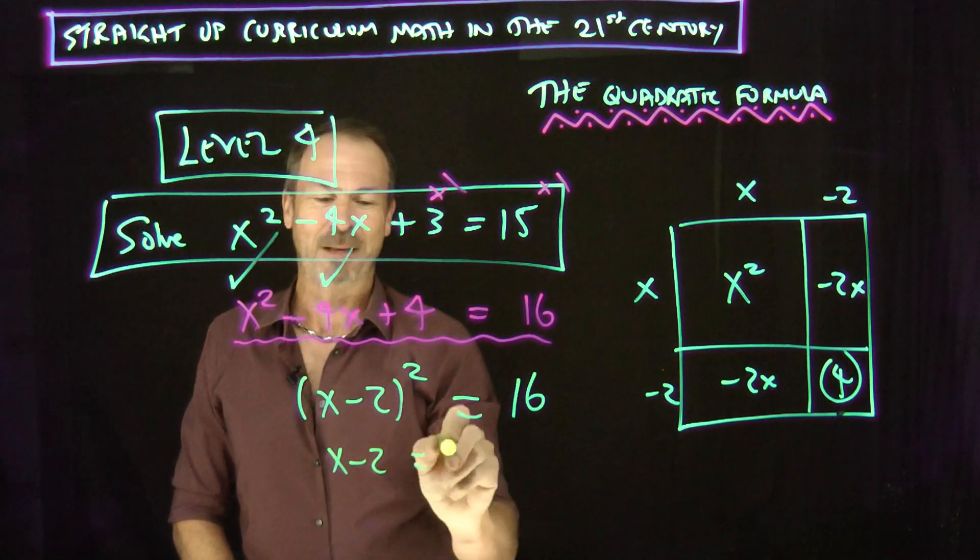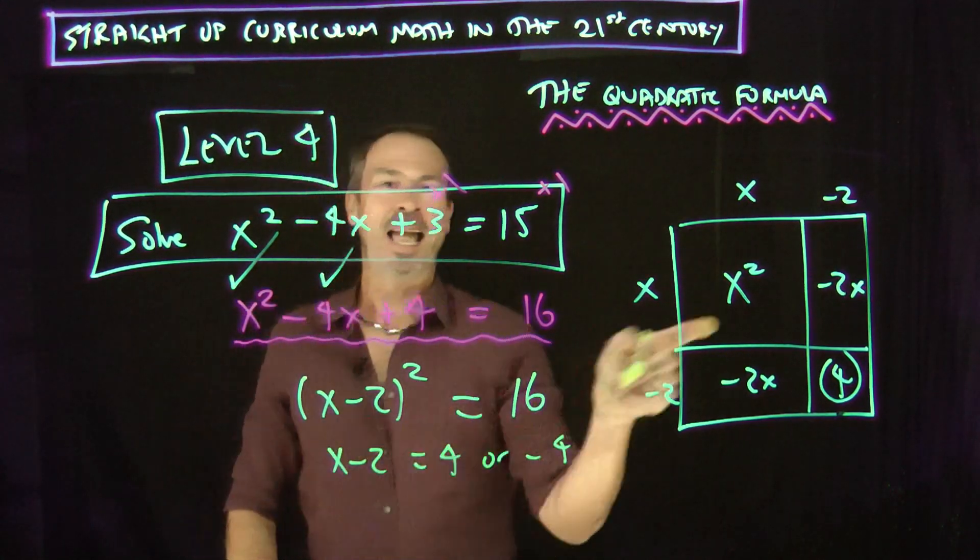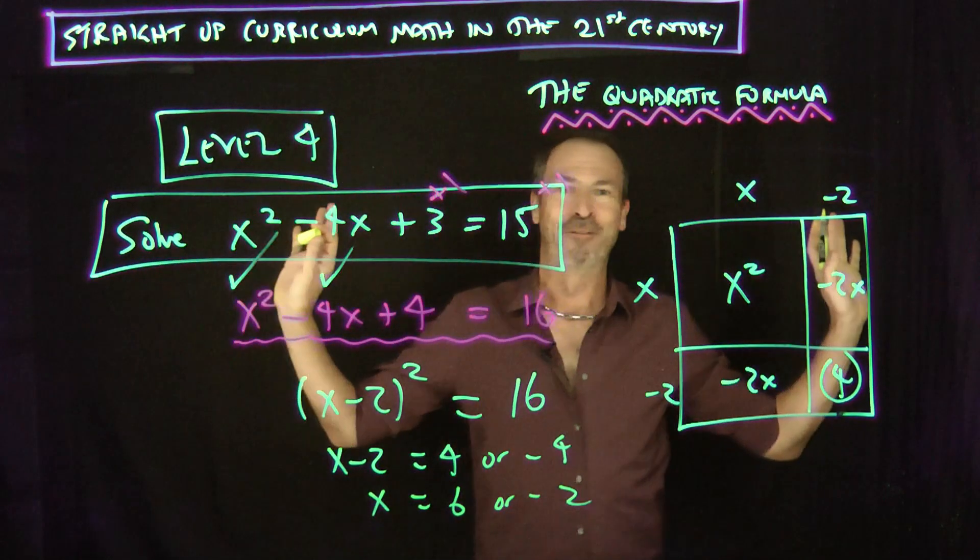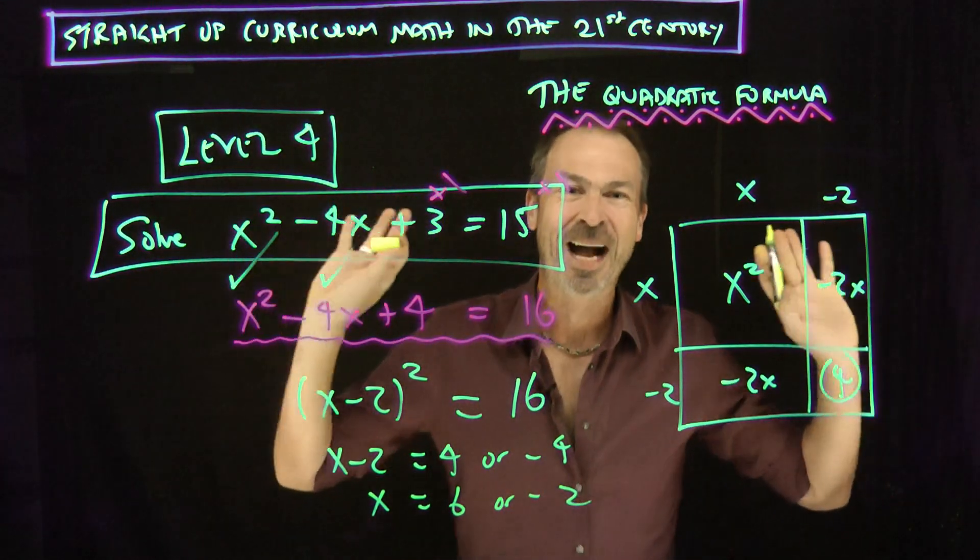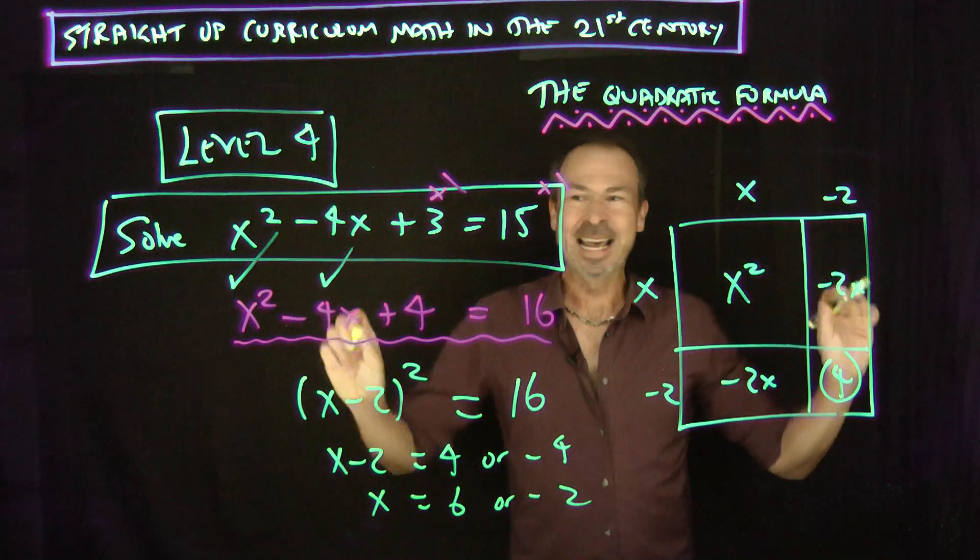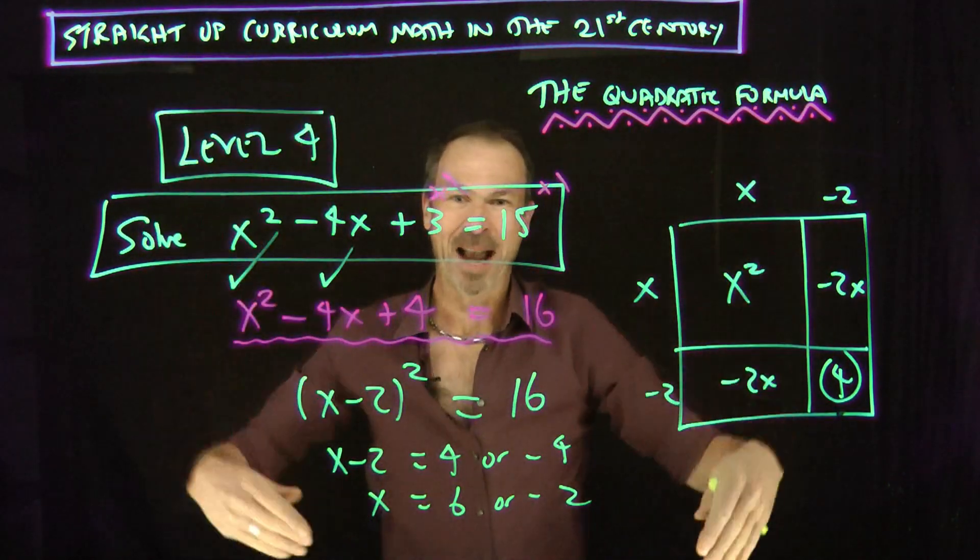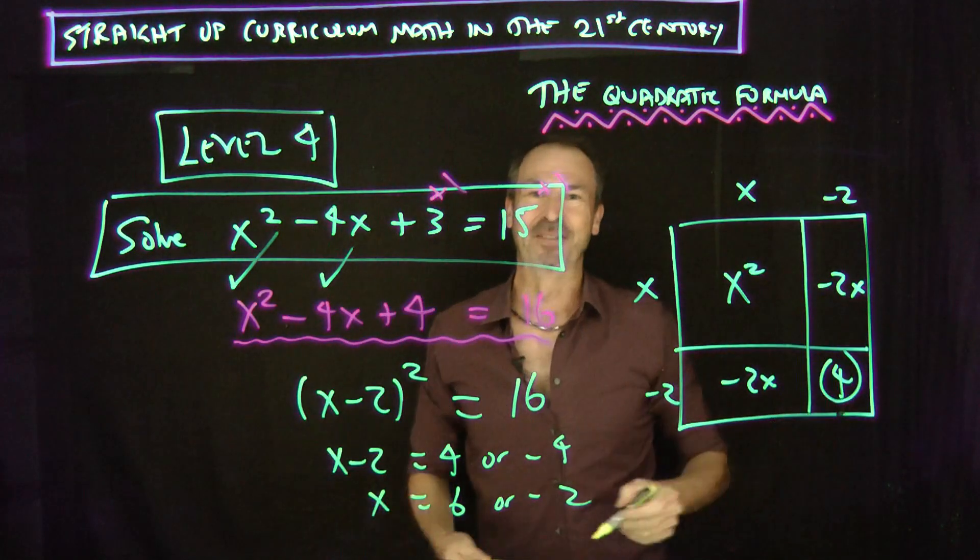Something squared is 16. My something better be 4 or negative 4. Add 2 throughout. X is 6 or negative 2. Beautiful. Beautiful. Whoa. The key is, if there's something in life you want, make it happen and deal with the consequences. And back to level 2. You just have to love this.